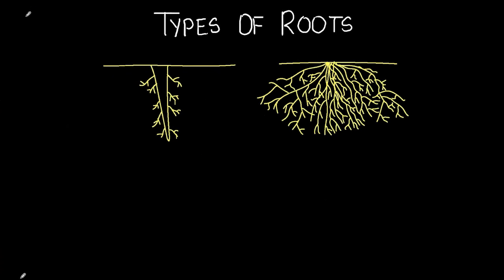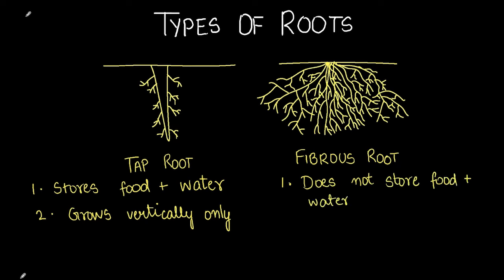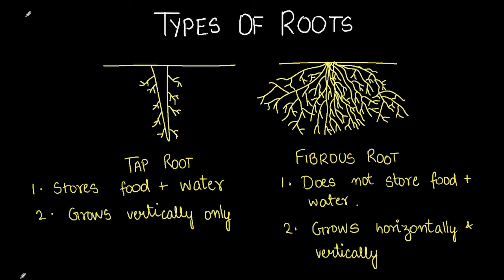Here are two different types of roots. The first one looks like a carrot — it's called a taproot, and the taproot stores food and water. Taproots have a lot of starch and water stored inside. The taproot grows vertically only — it does not grow sideways. On the other hand, the fibrous root doesn't store any food; it's there just for support, and it grows both horizontally and vertically.